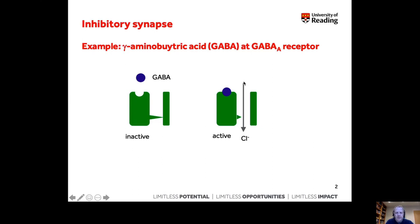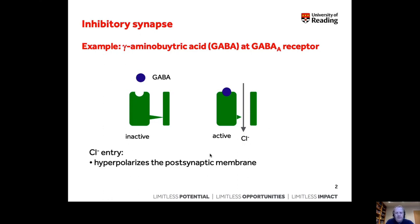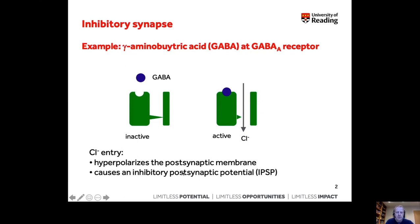As I said before, chloride moves across the membrane and makes the inside of the cell more negative. Chloride entry hyperpolarises the postsynaptic membrane instead of depolarising it, as a positively charged species such as a sodium ion through the nicotinic acetylcholine receptor would do, as we saw in the previous screencast. So this hyperpolarisation causes an inhibitory postsynaptic potential, an IPSP, which we talked about before.